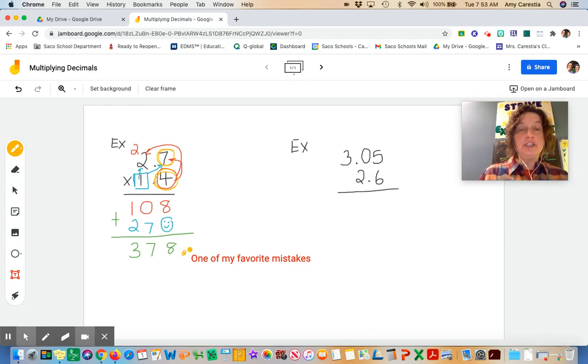I need to make sure that there are two digits to the right of that decimal, so I just move it one, two places to the left. So my answer is 3 and 78 hundredths.